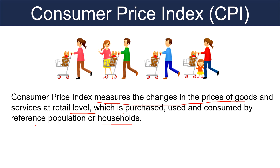I will give you one example so that you can understand CPI clearly. Suppose CPI for industrial workers in 2010 is 100 and in December 2021 is 314. This implies that in 2010, the consumer was able to get a basket of goods at Rs. 100 for which he has to pay Rs. 314 in 2021, which indicates how expensive the goods have become over time.